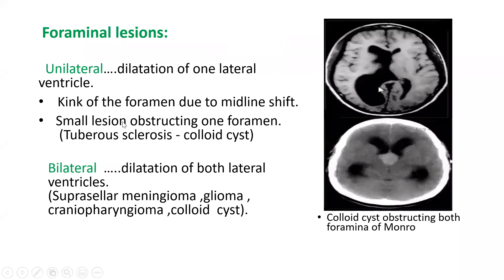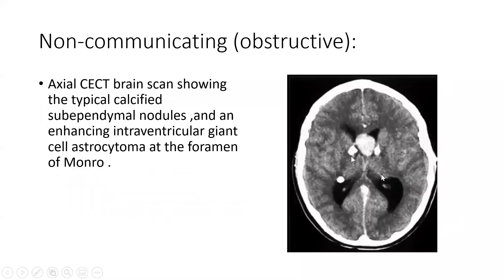Foramen of Monroe lesions may be either unilateral or bilateral. In unilateral lesions, there is dilatation of one lateral ventricle, due to kinking of the foramen from midline shift or a small lesion of one foramen, such as in tuberous sclerosis or colloid cysts. In bilateral lesions, there is dilatation of both lateral ventricles; causes include suprasellar meningioma, glioma, craniopharyngioma, or colloid cysts. A CT section shows colloid cysts obstructing both foramina of Monroe, and a post-contrast CT shows typical calcified subependymal nodules and an enhancing giant cell astrocytoma at the foramen of Monroe.